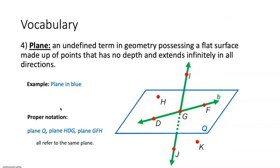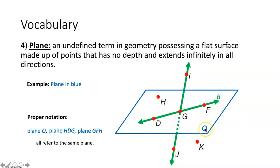Think about holding up a sheet of paper in front of you that continued forward, left, right, and backward forever — that would be what a plane would be like, except a paper has depth and a plane does not have any depth. To describe this plane in blue, first look for a capital letter in the corner of the plane. Here you can see this Q that doesn't have a point next to it — this Q is describing our plane in blue.